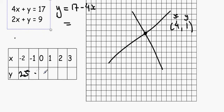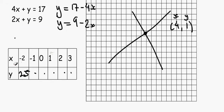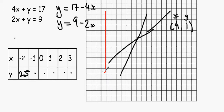For the second equation, rearrange to y equals 9 minus 2x. When plotting graphically, always make y the subject — it makes things much easier. Build a table of values, draw both lines, and look at the point of intersection. You'd get (4, 1) as the answer.